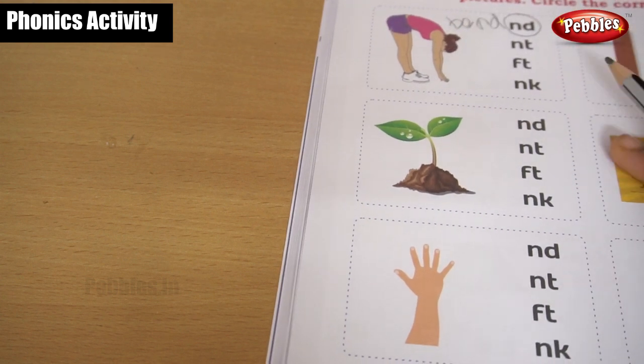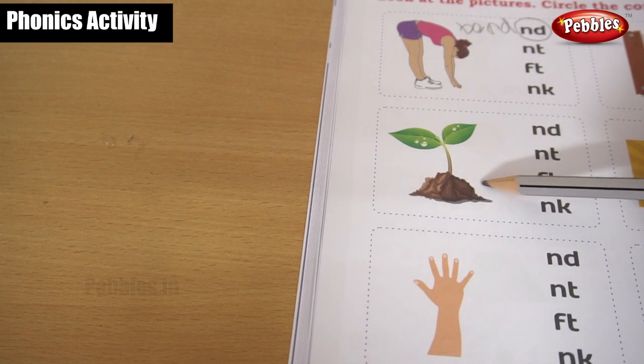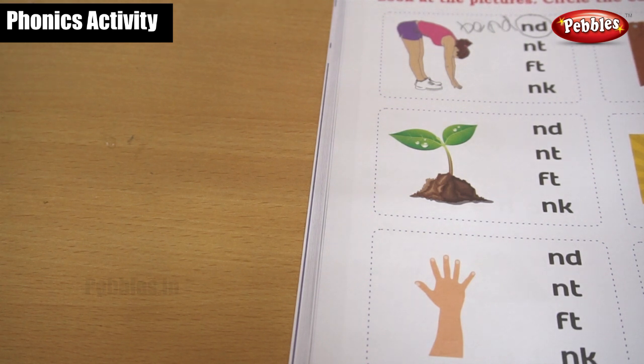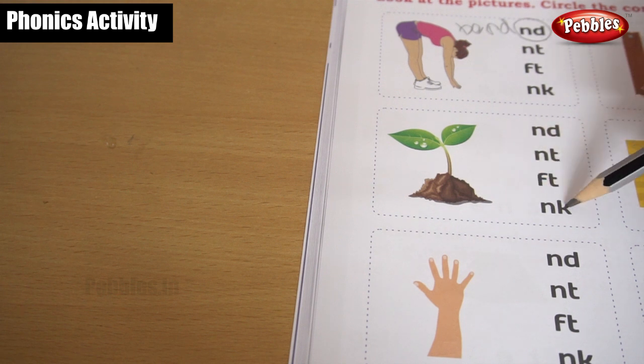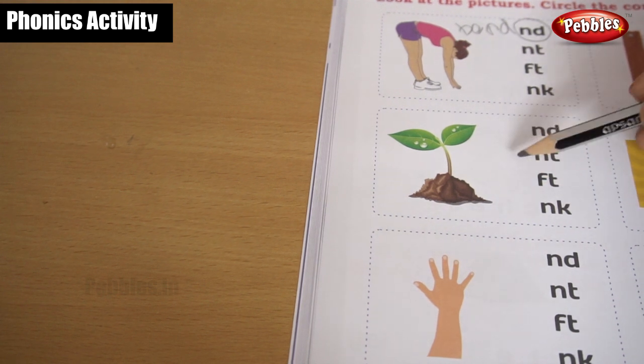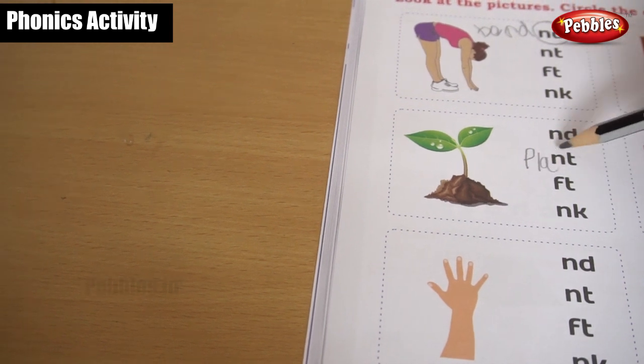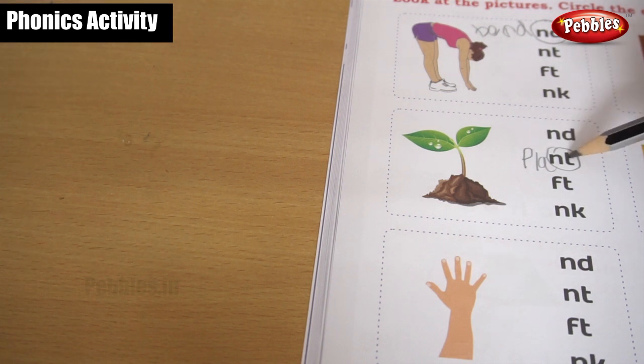Okay, next look at this picture. This is plant, plant, plant. Okay, let's tell the spelling for the plant children. P-L-A-N-T, plant. Not plant or not plant or not a plant. This is a plant. P-L-A-N-T, plant, plant, plant.